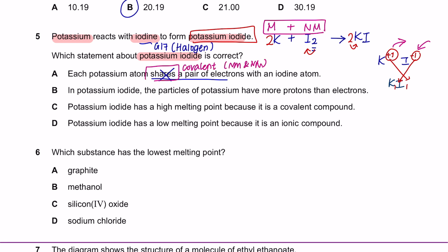Which statement about potassium iodide is correct? Option A says each potassium atom shares a pair of electrons — this is wrong because potassium is a metal and iodine is a non-metal, making this an ionic bond. An ionic bond involves donating and gaining electrons to become stable. Option B says in potassium iodide, the particles of potassium have more protons than electrons. In potassium iodide, potassium has donated 1 electron, leaving it with 18 electrons but still 19 protons. So yes, this statement is correct — the answer is B.